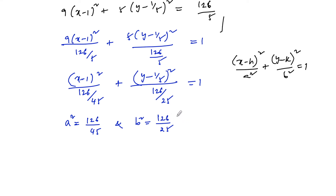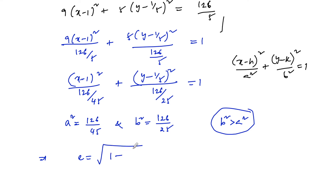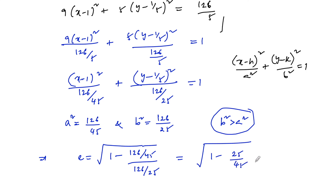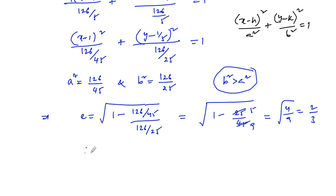Since b² > a², the eccentricity is e = √(1 - a²/b²) = √(1 - (126/45)/(126/25)) = √(1 - 25/45) = √(4/9) = 2/3. Therefore, the eccentricity of the given ellipse is 2/3.